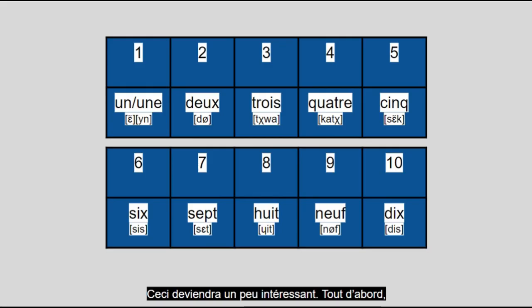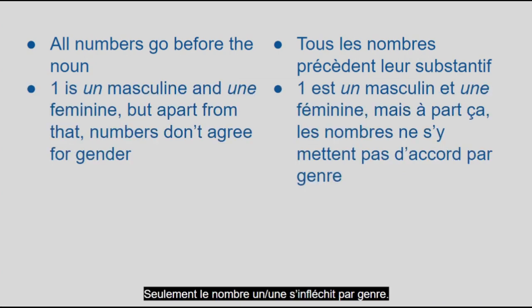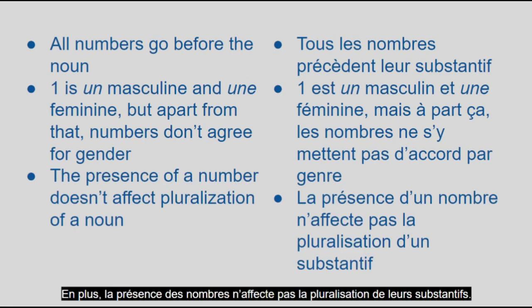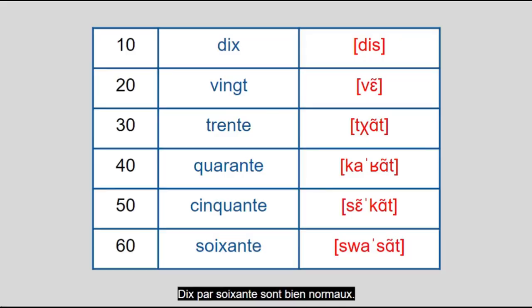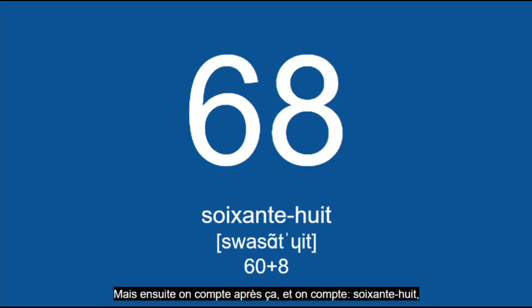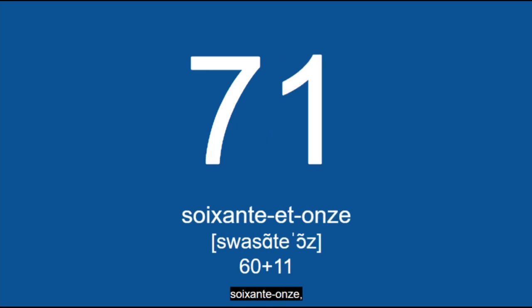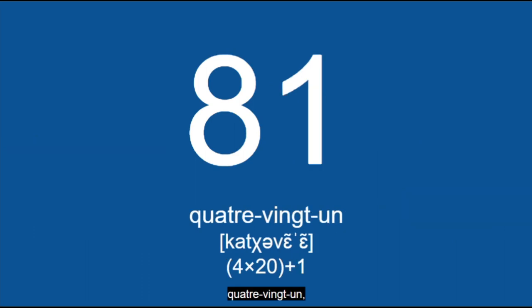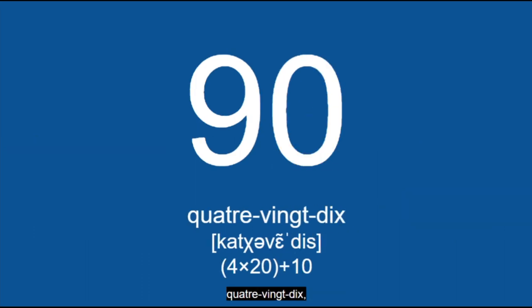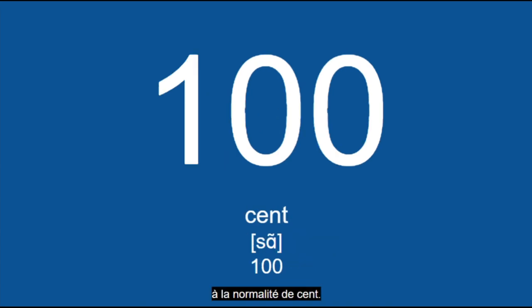Here's the number section — this'll get a bit interesting. Unlike adjectives, numbers both cardinal and ordinal go before the noun. Only the number one, un or une, gets inflected for gender. Also, the presence of numbers does not affect the pluralization of their nouns. But the real fun happens in the tens. 10 through 60 are fairly normal, but then you get soixante-huit (68), soixante-neuf (69), soixante-dix (70), soixante-onze (71), soixante-douze (72), and then soixante-dix-huit (78), soixante-dix-neuf (79), quatre-vingts (80), quatre-vingt-un (81), quatre-vingt-deux (82), then later quatre-vingt-dix (90), quatre-vingt-onze (91), all the way up to quatre-vingt-dix-neuf (99) before you get back to normal with cent (100). The Swiss and Belgian French dialects count normally, by the way, and they love making fun of other French speakers for that. Ordinal numbers are fairly simple: first is premier, but after that you just take the cardinal numbers and add -ième to the end.